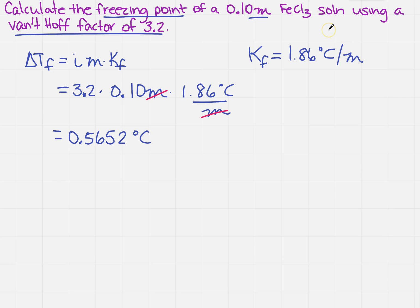So again, we use the KF for water, so I'm going to take 0 minus 0.5652, which is going to give me negative 0.5652 degrees C.